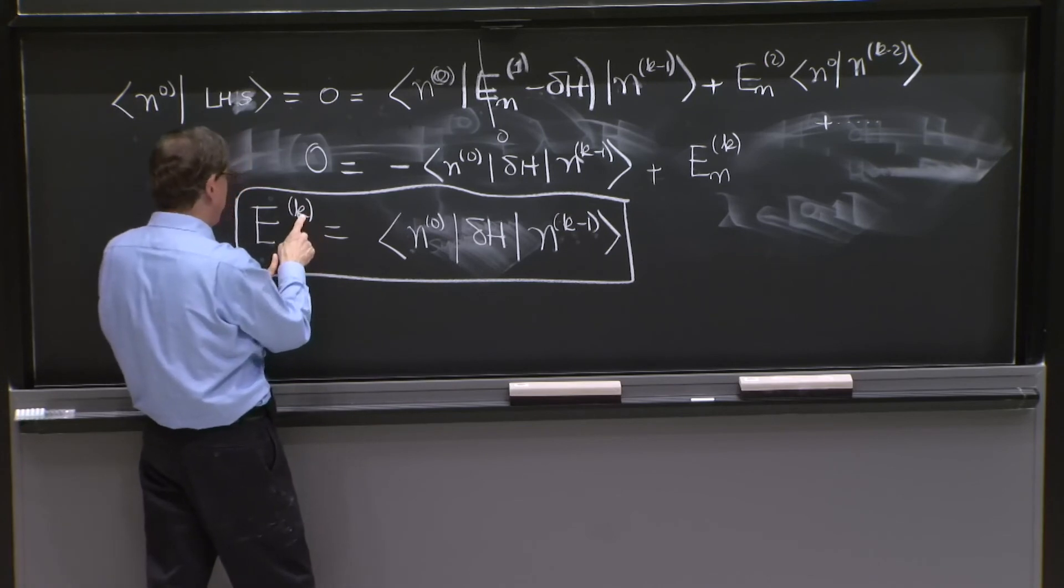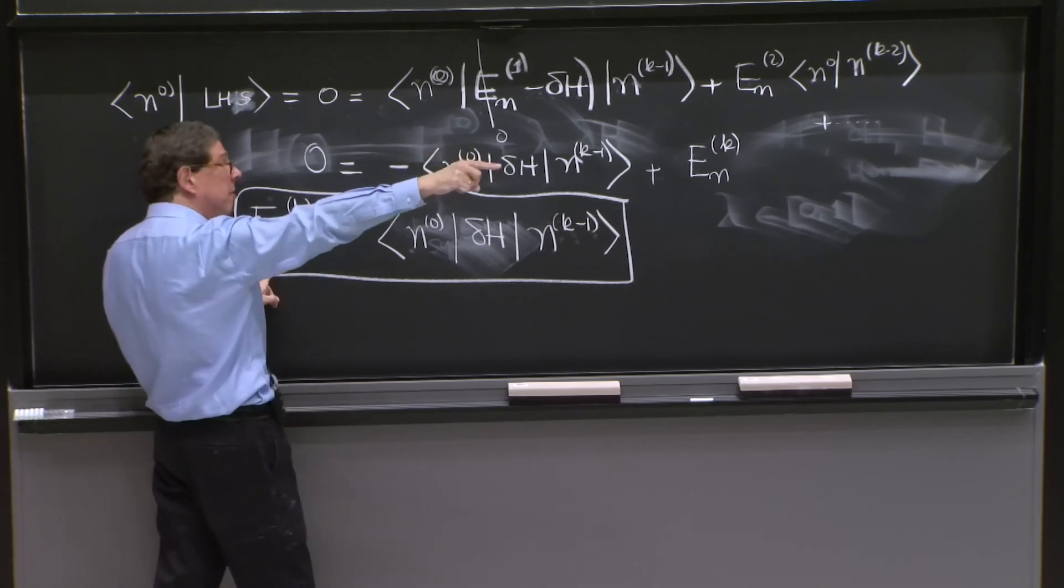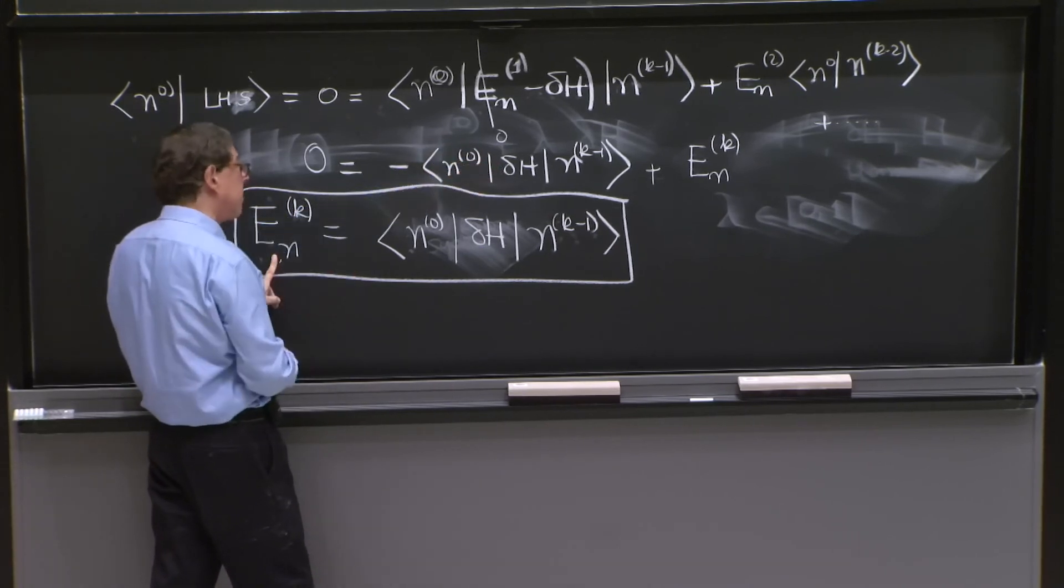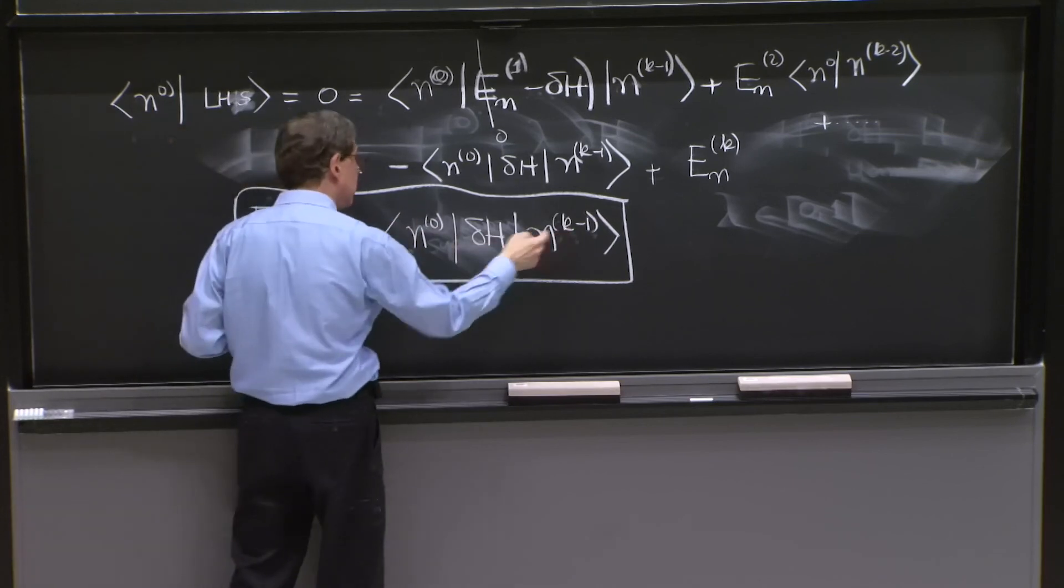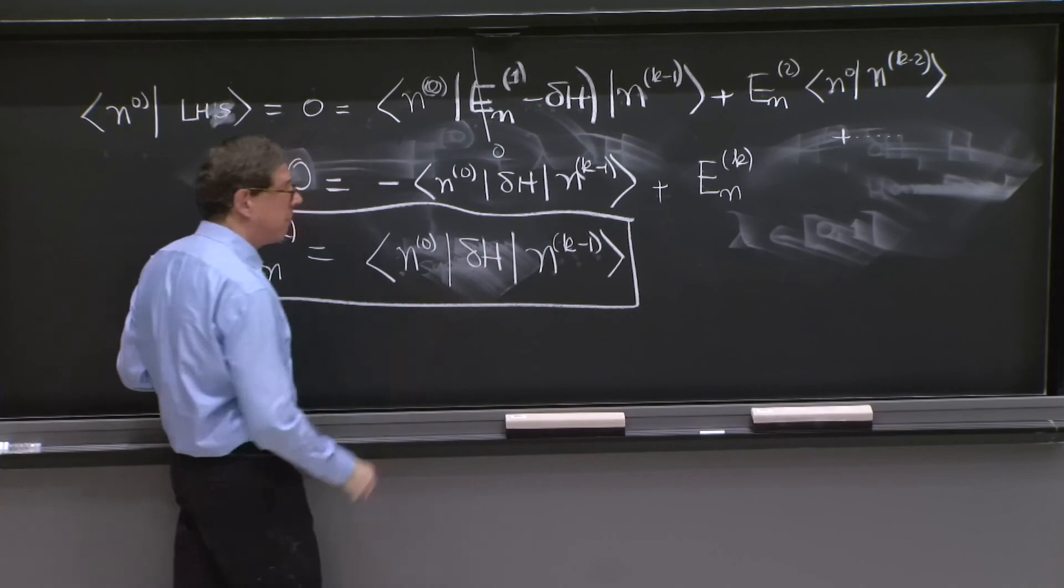This formula certainly works when k is equal to 1, in which case it reproduces the formula we had on the blackboard to the right. When k is equal to 1, you get the expectation value of delta h around 0.